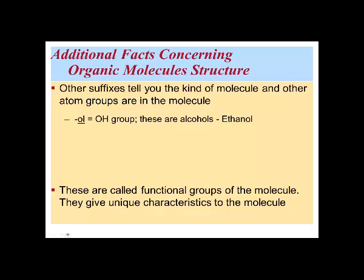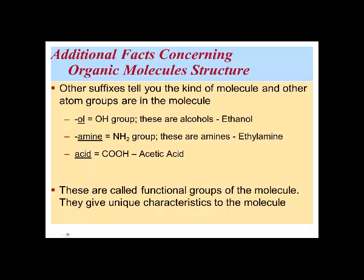One such group is the OH group, or hydroxyl group, and these make alcohols. When you see the OL ending, it tells us there is a hydroxyl group attached to the carbon skeleton. The amine group has nitrogen with two hydrogens, as in ethyl amine. If an organic molecule's name has acid in it, as in acetic acid, it's going to have a carboxylic acid group — containing carbon, two oxygens, and a hydroxyl group. The ONE ending, as in acetone, indicates a double-bonded oxygen to the carbon skeleton. These functional groups make the molecule hydrophilic and change the properties of the organic molecule.